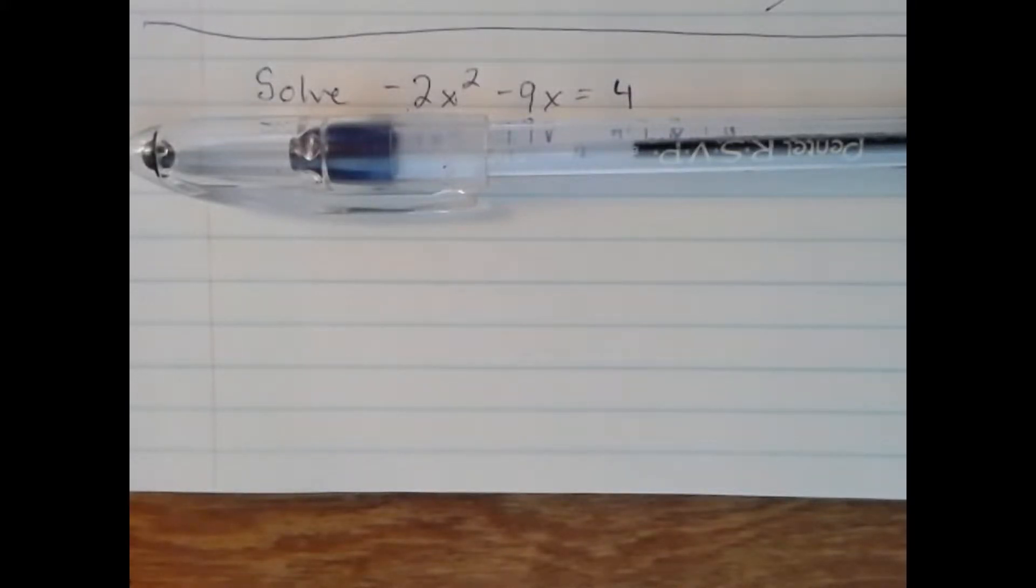Alright, so on this problem, we're asked to solve -2x² - 9x = 4. It's a quadratic equation. We can solve it by factoring.